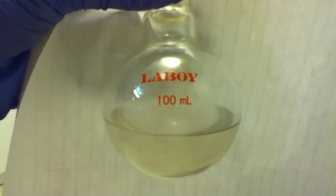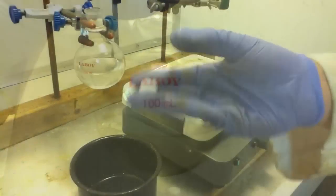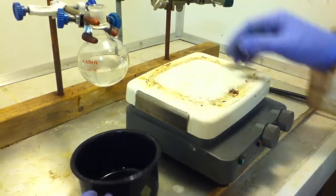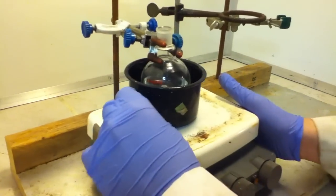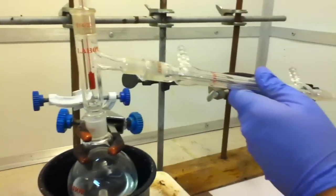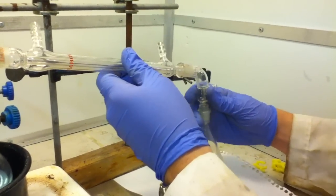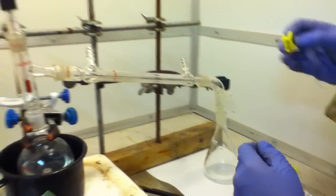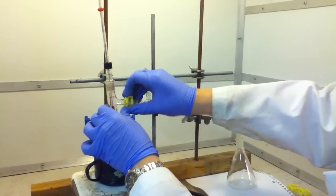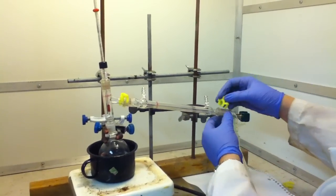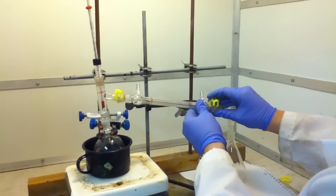This is the crude chloroform. Add a stir bar to the flask, immerse it in an oil bath, and place it above a magnetic stirrer and heater. Assemble an apparatus for downward distillation. Add keck clamps to the joints to make sure they are sealed. Use grease.